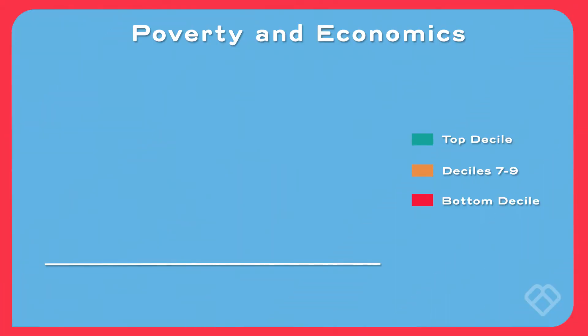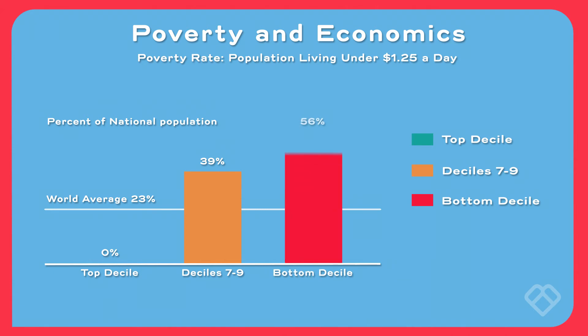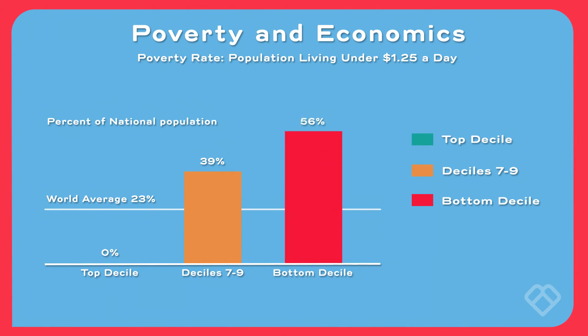Similarly, looking at poverty specifically — the number of people living under $1.25 a day — in wealthy countries almost nobody lives on that little. But in deciles seven through nine, almost 40% of the population lives under $1.25 a day, and in the bottom decile it's more than half the population.